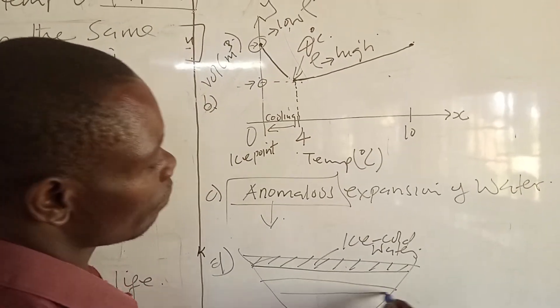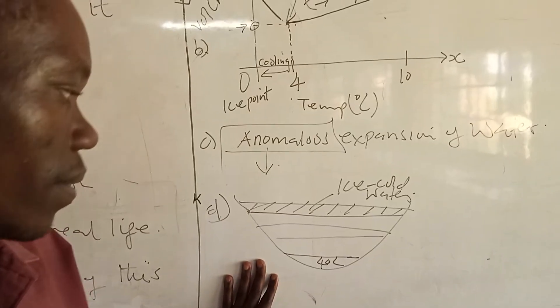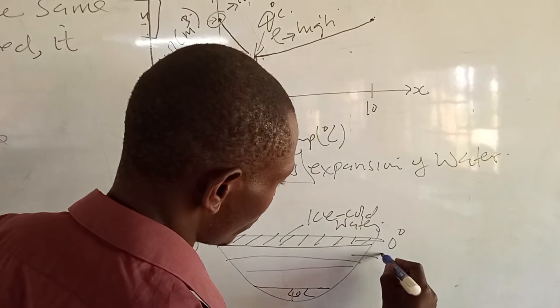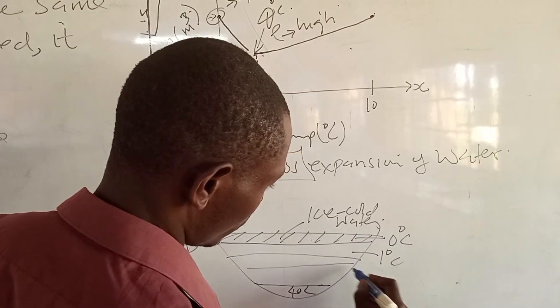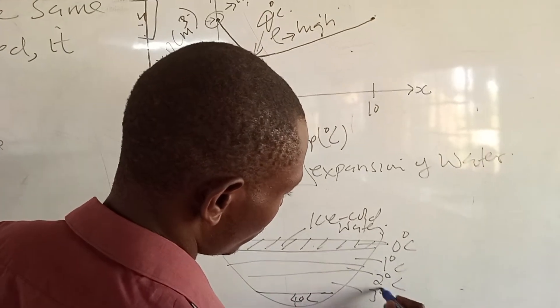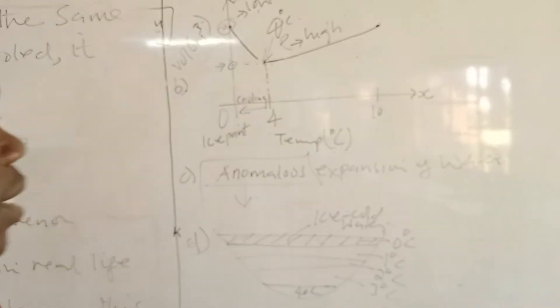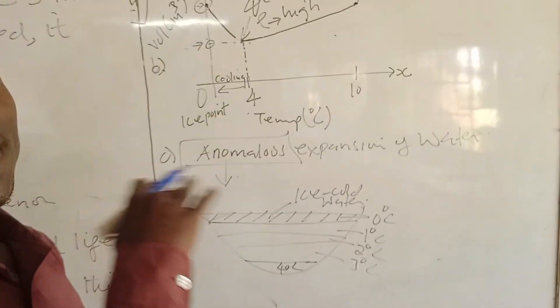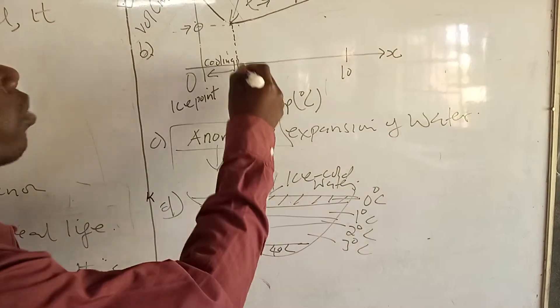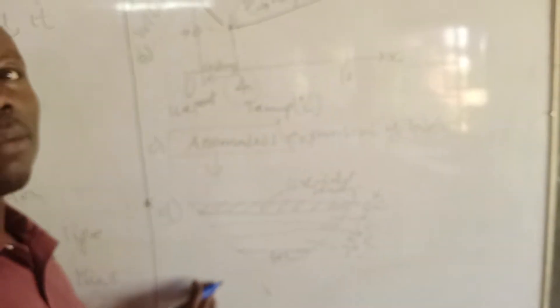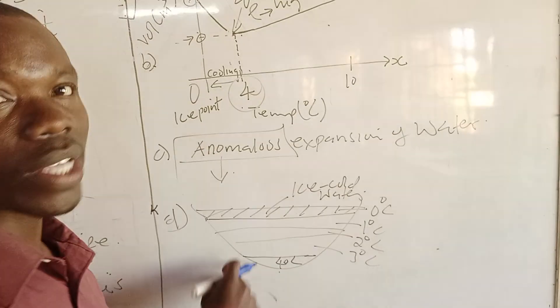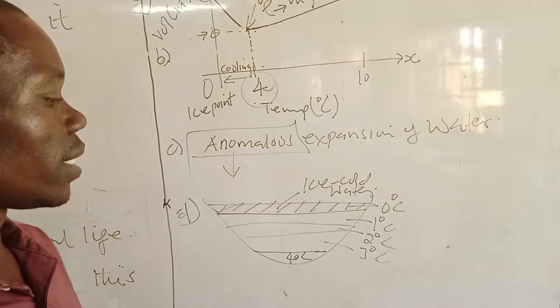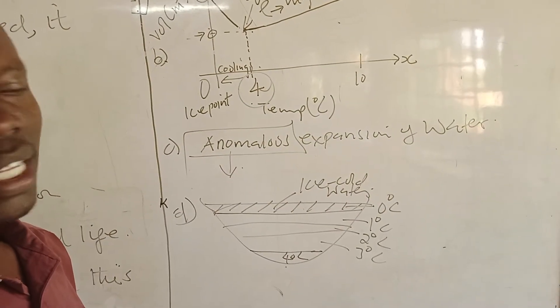Now, this water will be having different layers at different temperatures. It can be 0 degrees here, 1 degree here, 2 degrees Celsius, 3 degrees Celsius, like that. Now, the application means when the water gets very cold until the upper surface turns into ice, the warm water at 4 degrees will sink to the bottom. And this will help aquatic animals like fish to survive even during cold seasons. But the problem is, they always tend to reside at the deepest part of the water body. That is application.